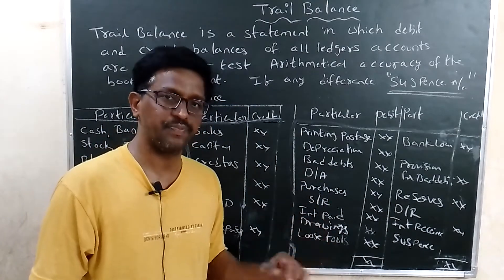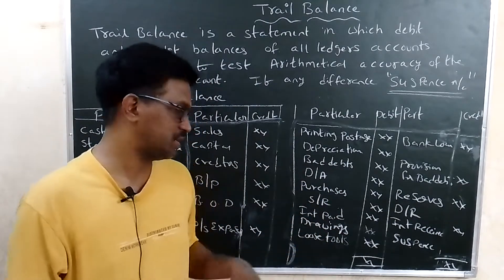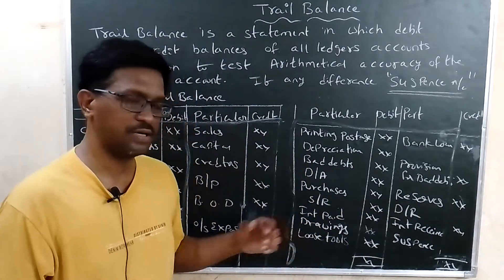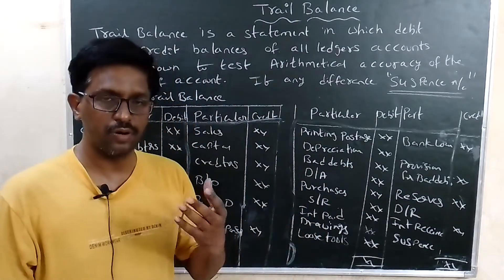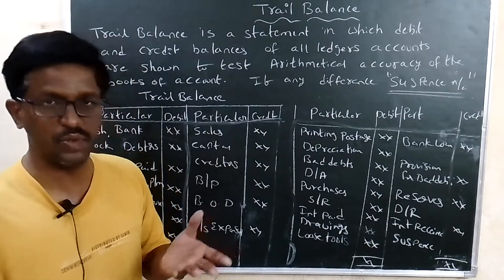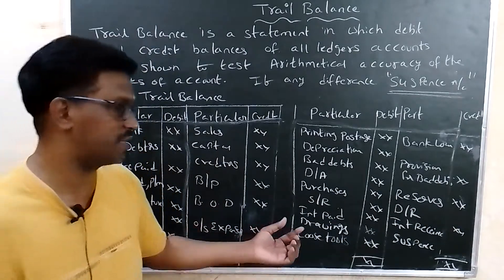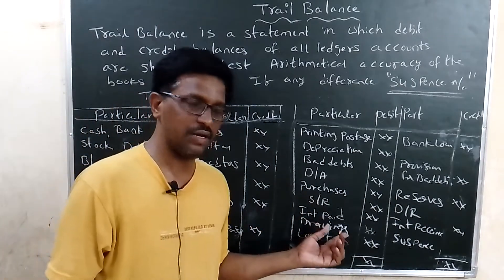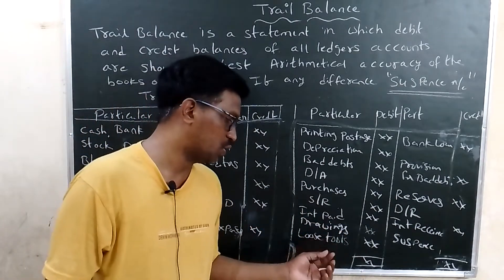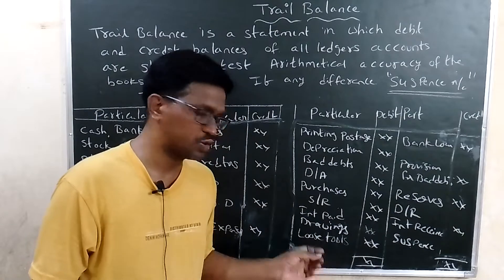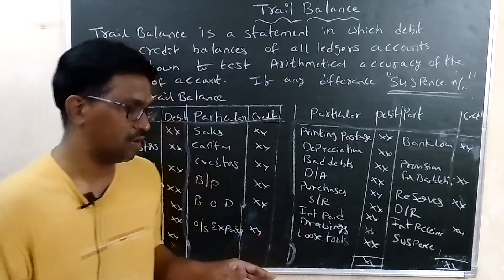Interest expenses, drawings — property used for personal use — always show a debit balance. Losses and loss assets are also on the debit side.